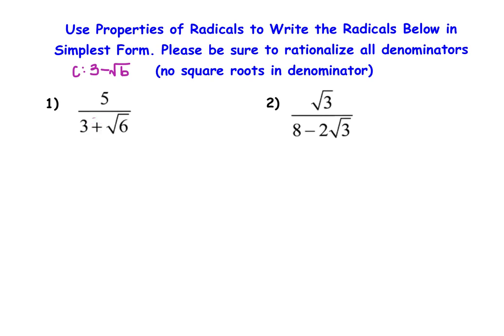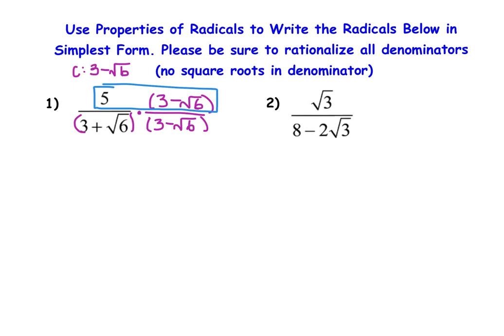We're going to multiply by the conjugate: the denominator by 3 minus the square root of 6, and also the numerator by 3 minus the square root of 6, because we have to multiply by 1 — the same thing top and bottom. Starting with the numerator using the distributive property: 5 times 3 gives 15, then minus 5 square root of 6, because 5 is outside the root and 6 is inside, so they stay one inside and one outside.